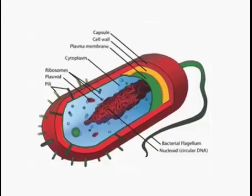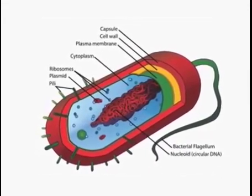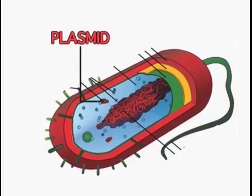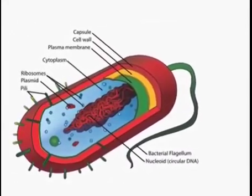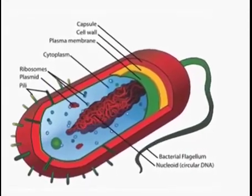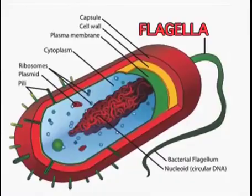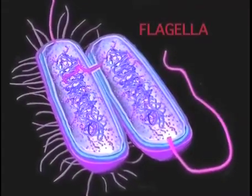The plasmid also reproduces along with the DNA, but it contains genes for antibiotic resistance and other sex factors, and is therefore beneficial for the bacteria in which it is present. As you can see in the diagram, a long thread-like structure is present which is much thicker than the pili — this is known as flagella. These flagella enable the bacteria to move about freely. The cell organelles are absent in these prokaryotic organisms, except that they contain ribosomes, which are required for protein synthesis.